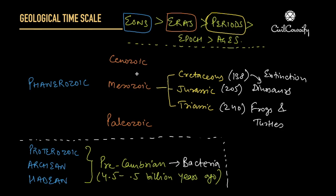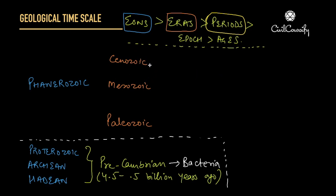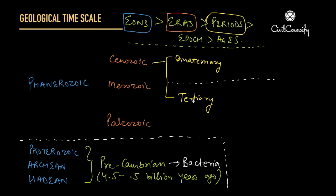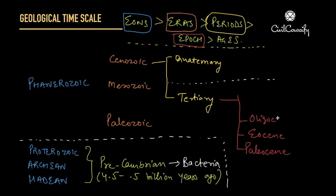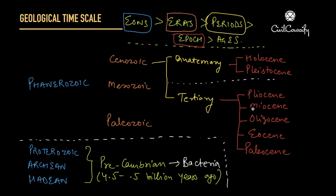Now let us quickly look at the periods of the Cenozoic era, which is the most important one because we are living in this era. The Cenozoic era is divided into two periods: the older one is the Tertiary period and the newer one is the Quaternary period. Since this is the latest set of periods, we need to know its further classification. The Tertiary period is divided into epochs: Paleocene, Eocene, Oligocene, Miocene and Pliocene. The Quaternary period is divided into two epochs: the older Pleistocene and the newer Holocene.